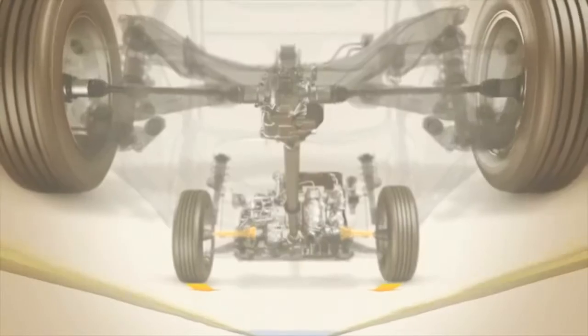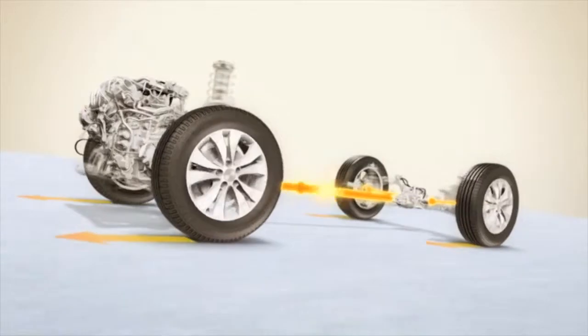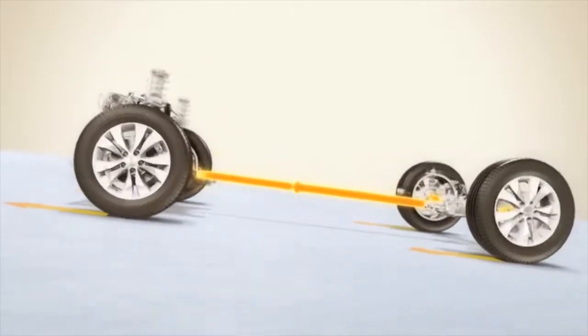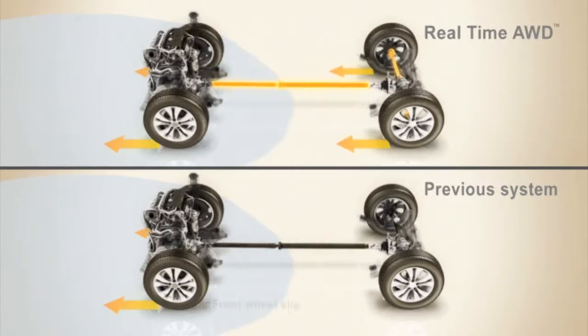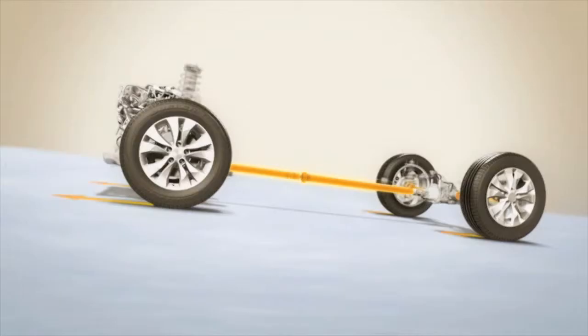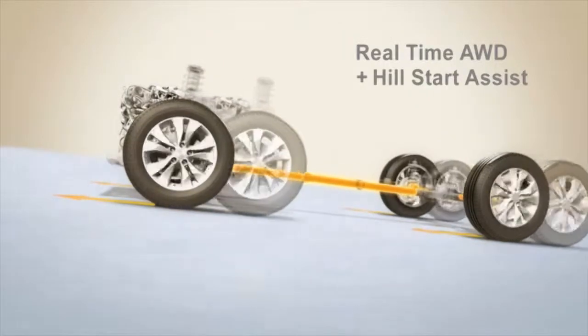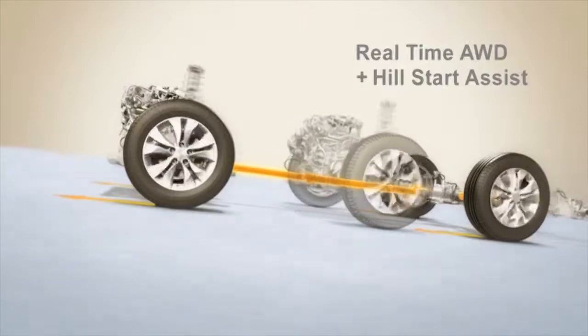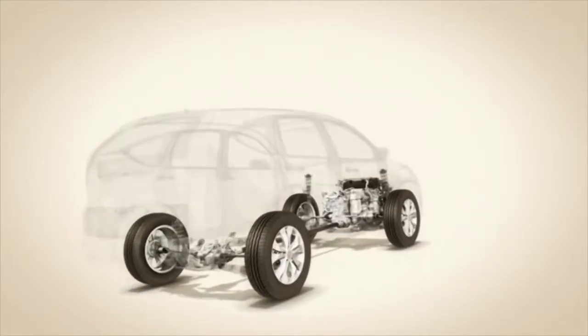On slippery roads or on an incline, the system distributes the optimal amount of torque to the rear wheels. In the previous system, during off-the-line acceleration on slippery roads, the rear wheels did not engage until the front wheels slipped. The new system maintains standby torque, allowing the rear wheels to grip the road immediately for greater efficiency and smoothness.